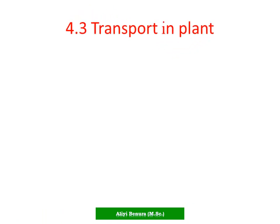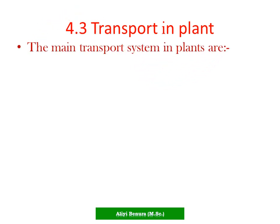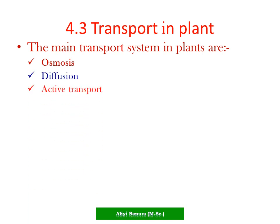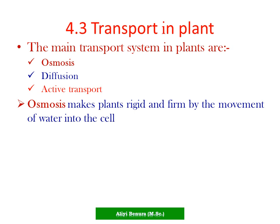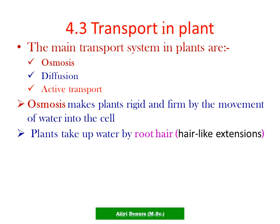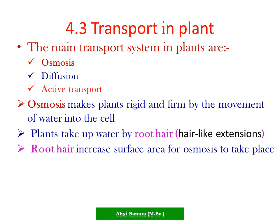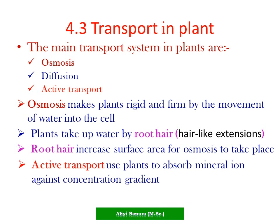4.3: Transport in Plants. The main transport systems in plants are osmosis, diffusion, and active transport. Osmosis makes plants rigid and firm by movement of water into the cell. Plants take up water by root hairs, which are hair-like extensions. Root hairs increase surface area for osmosis to take place. Active transport allows plants to absorb mineral ions against the concentration gradient, which means it needs energy.